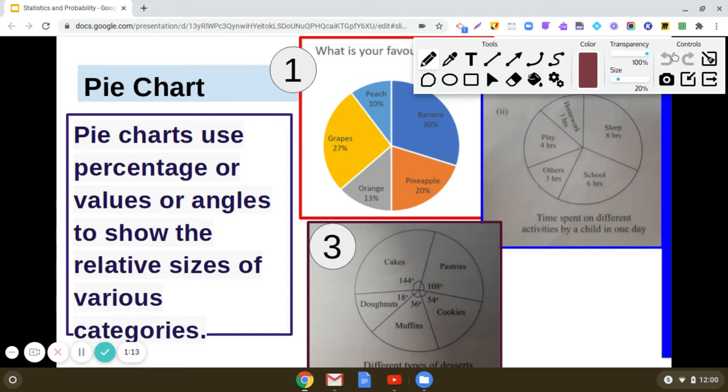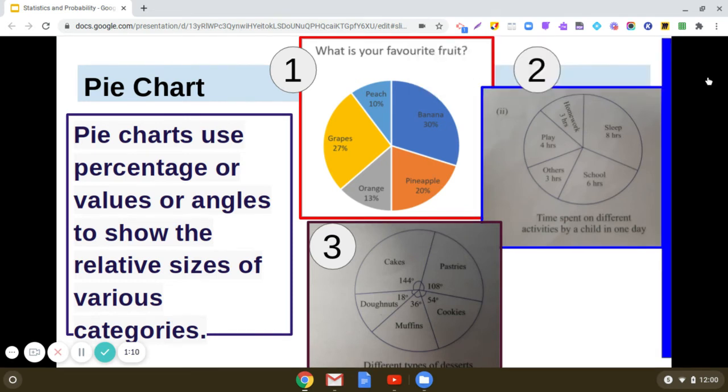Now see the second one. The values show how time is spent on different activities by a child in one day: eight hours sleep, six hours school, three hours other work, four hours play, and three hours homework. It gives the complete structure of 24 hours and its breakdown. Here, 24 hours is 100 percent, split into different sectors of the circle.